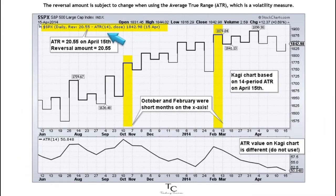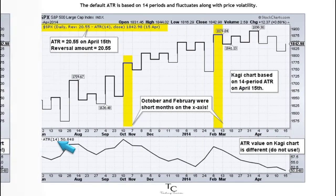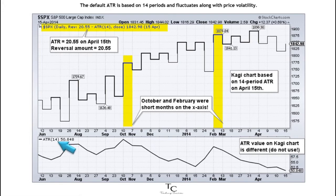The reversal amount is subject to change when using the Average True Range, ATR, which is a volatility measure. The default ATR is based on 14 periods and fluctuates along with price volatility.